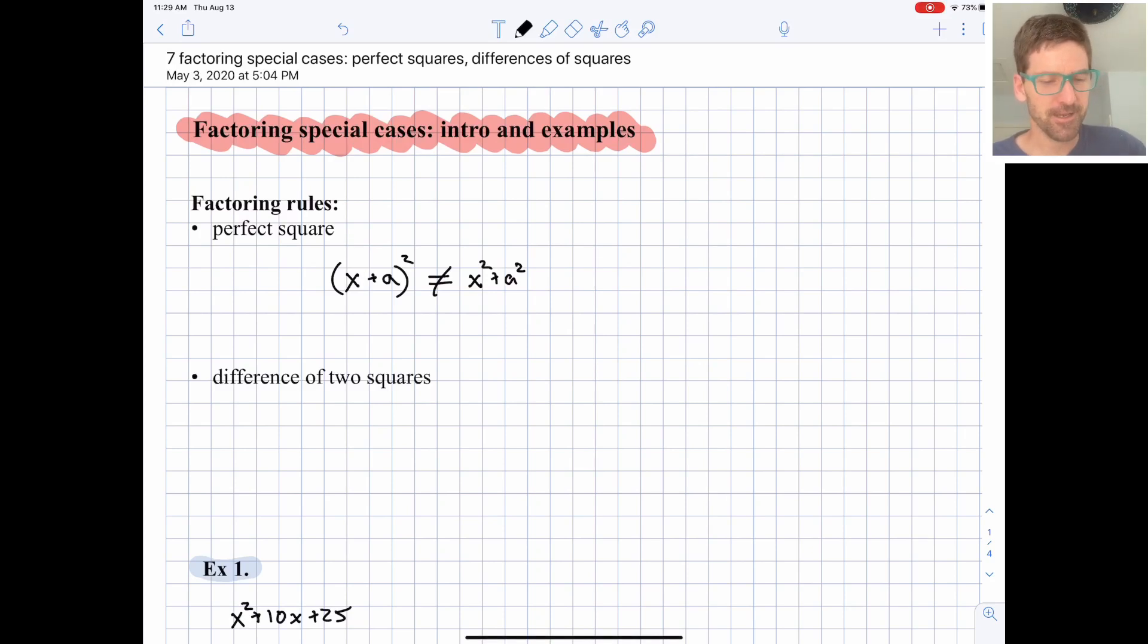But it is equal to x² + 2ax + a². So you double a to get the middle term, and you square a to get the final term.